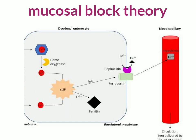The iron crosses the basal membrane in the form of Fe2+. After crossing the basal membrane, it reaches the bloodstream, where it is re-oxidized to the Fe3+ state.